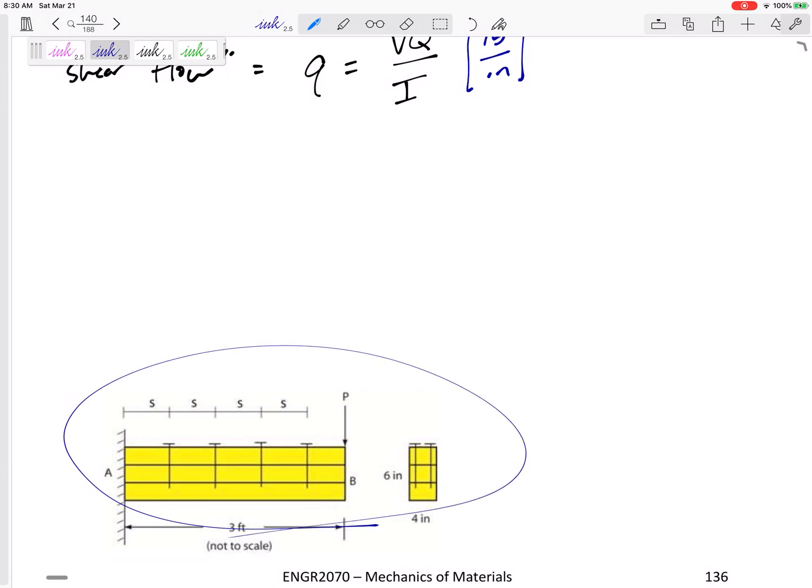If we have a beam, if we have an object, if we have any material that is kind of held together by nails, and if we know, let's say we know the force each nail can take, we know the force per nail, that nail is strong enough that that nail can hold together a force of this many pounds.